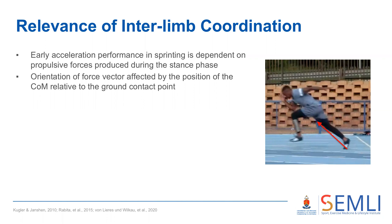The orientation of the ground reaction force vector is affected by the position of the center of mass relative to the contact point, and this in turn is determined by the position and orientation of all of the body segments. A forward leaning trunk and placement of the foot directly below or behind the center of mass at contact are key kinematic features of good early acceleration performance.